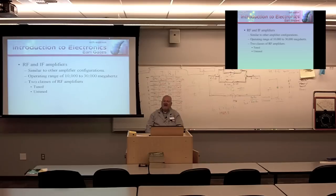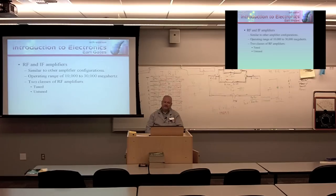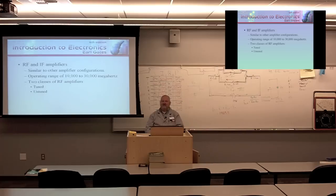RF and IF amplifiers are similar to other amplifier configurations, except the operating ranges are quite extreme — from 10,000 to 30,000 megahertz. 30,000 megahertz is 30 gigahertz. There are two classes of RF amplifiers: the tuned amplifier, which is tuned to a unique frequency to amplify just that frequency, and the untuned amplifier, where we're typically wanting to amplify something more broadband.